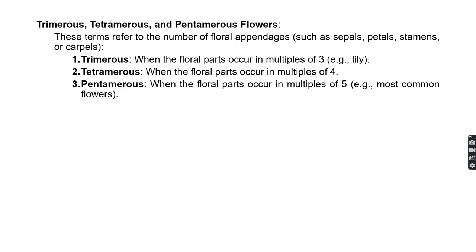Next are trimerous, tetramerous, and pentamerous flowers. These terms refer to the number of flower appendages. If floral parts occur in multiples of three, we call it trimerous. If in multiples of four, it is tetramerous. If in multiples of five, it is pentamerous. Examples: trimerous — lily; tetramerous — mustard; pentamerous — hibiscus.